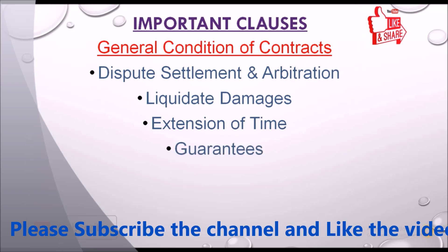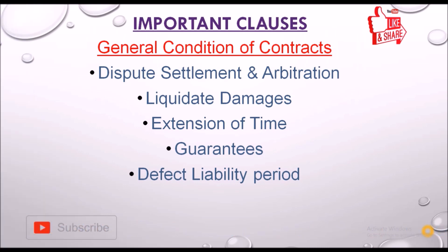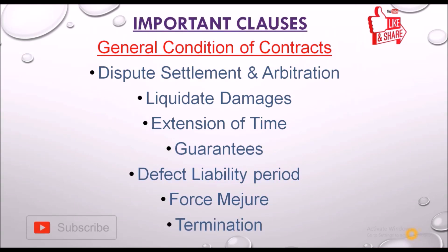Guarantees of work — whatever work is executed by the contractor, a guarantee is given for the defect liability period. The retention or security money is withheld with the client and released after the defect liability period. Force majeure covers conditions where delay is not considered the contractor's fault, such as war between countries or an earthquake. Termination defines the conditions under which the contract can be terminated by the client or the contractor.